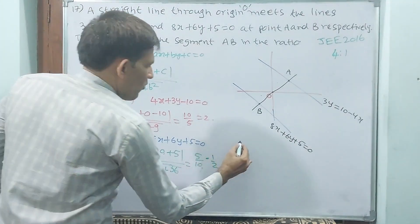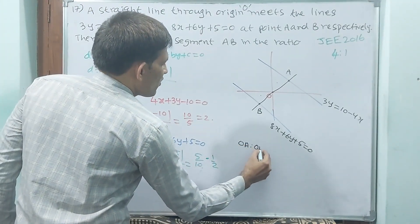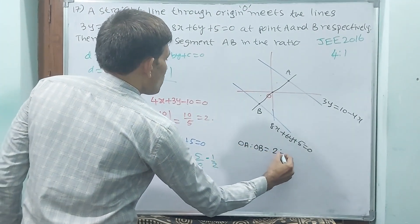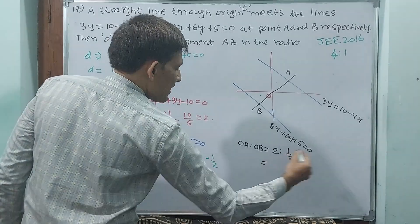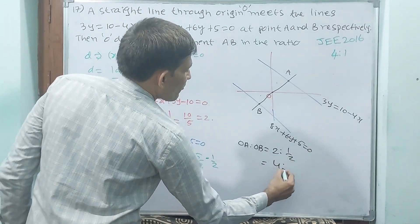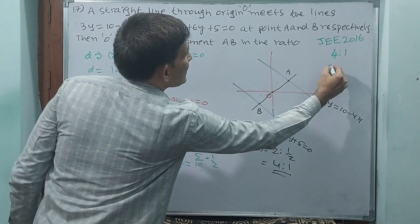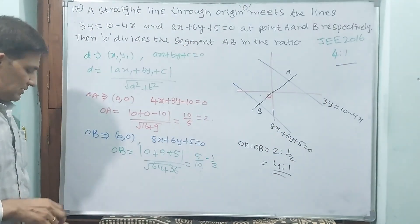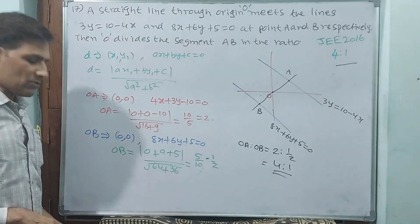Now, what is the ratio? OA : OB = 2 : 1/2. If you multiply by 2, this is 4 : 1. That is the answer. Let us go for the next question.